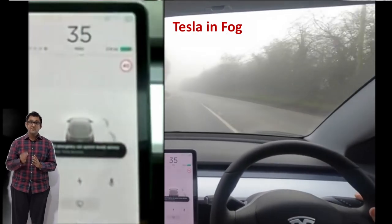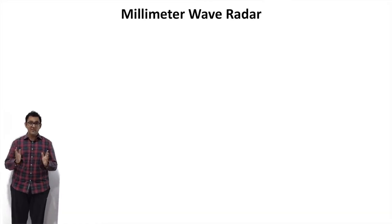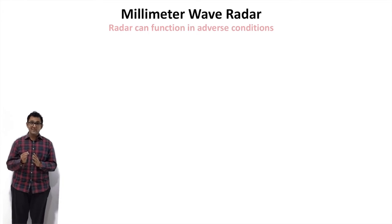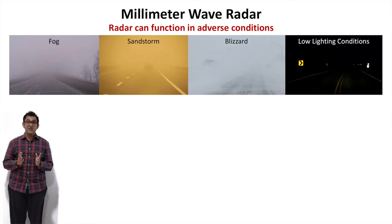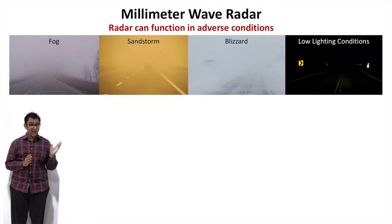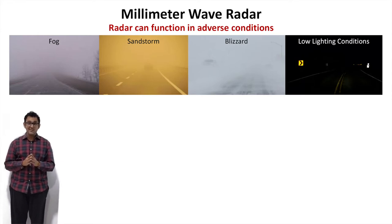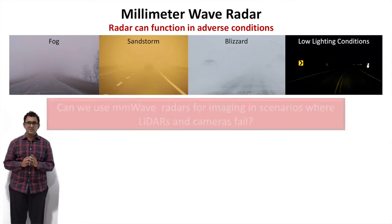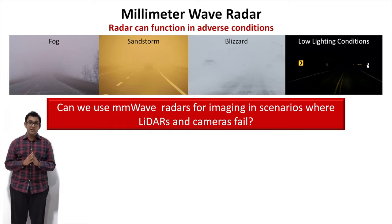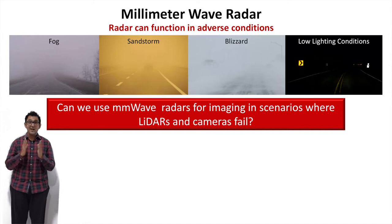This is where millimeter wave radars can be really helpful. Wireless signals actually go through fog, sandstorms, and blizzards, and do not even require light to work. This last point is important because some manufacturers like Tesla don't even use LIDAR, and in low light the cameras are not as reliable. So the question we ask here is: can we use millimeter wave radars for imaging in scenarios where LIDARs and cameras fail?